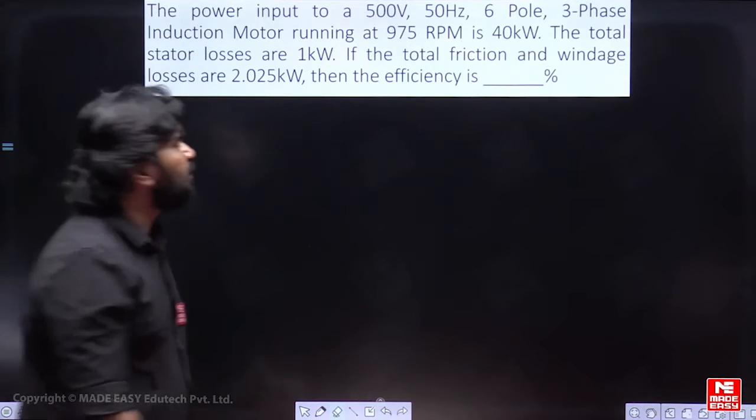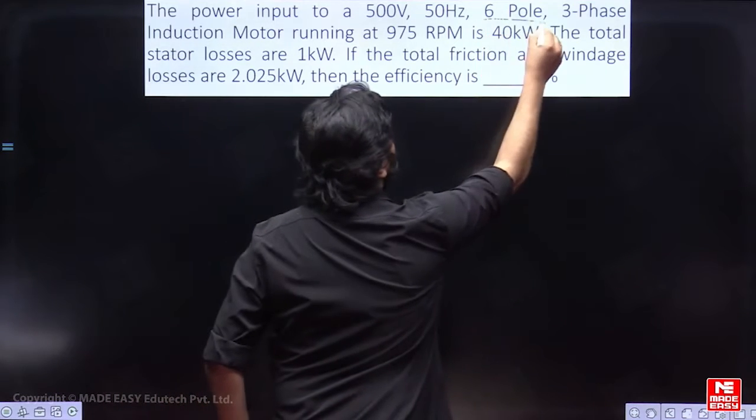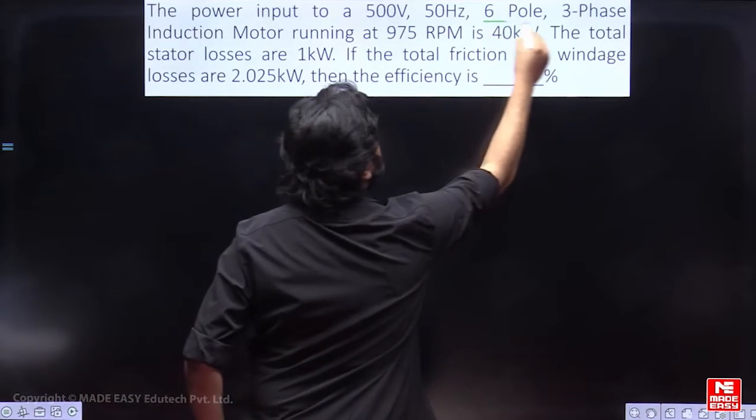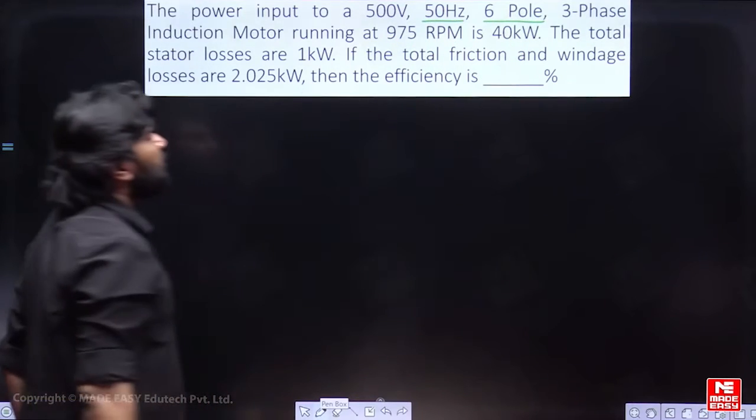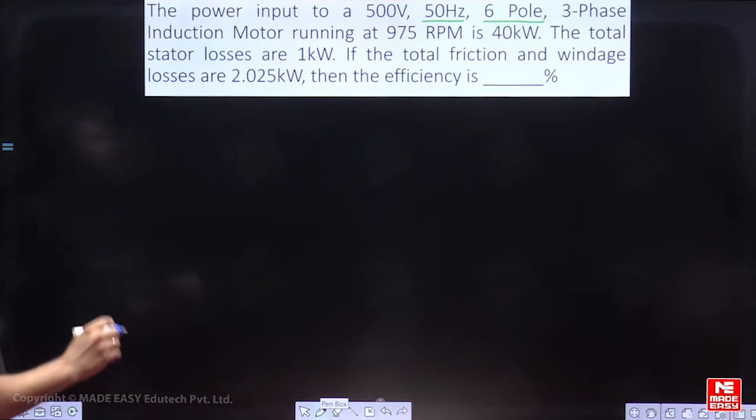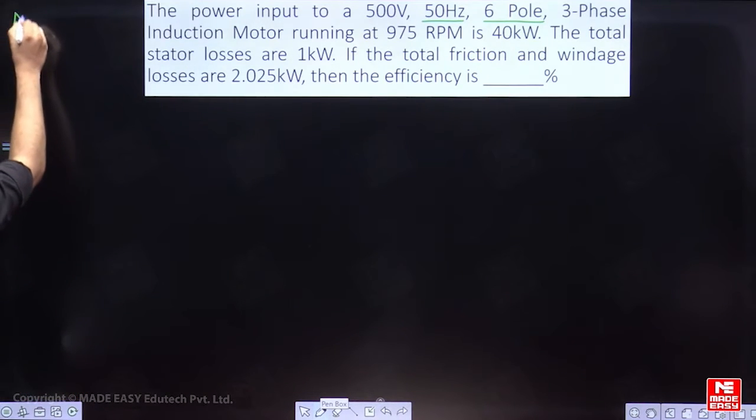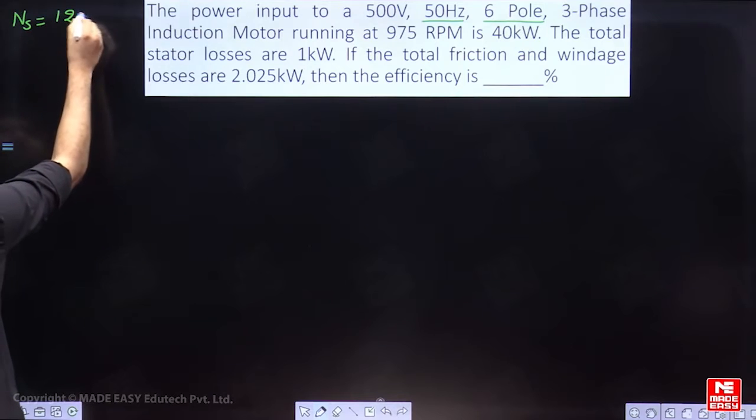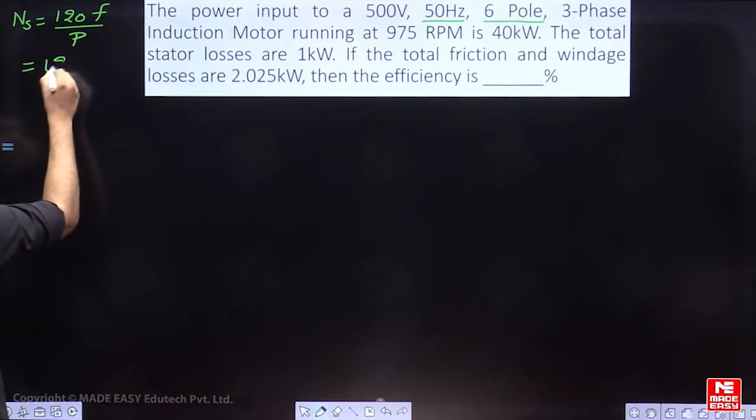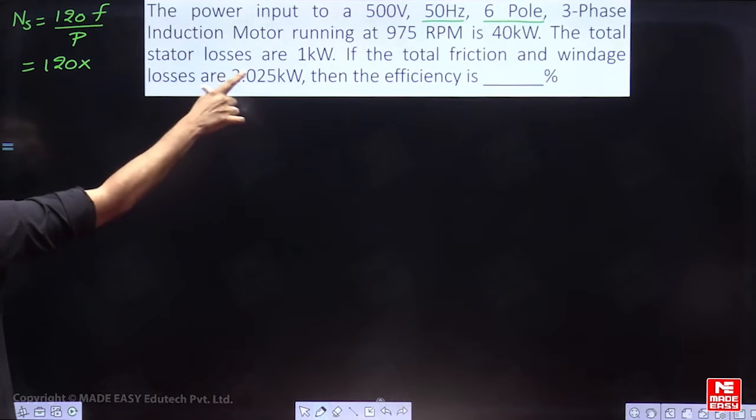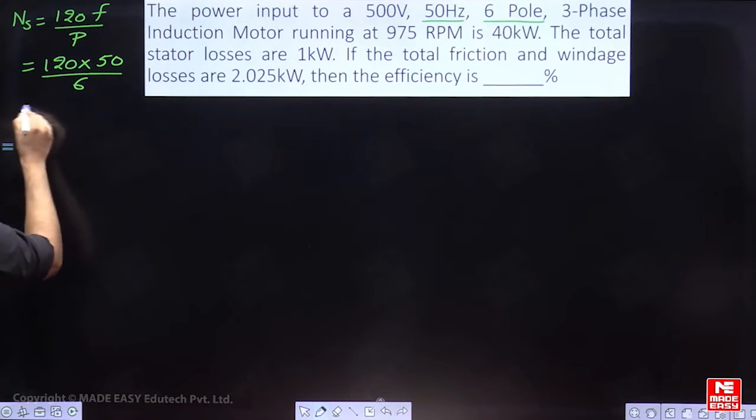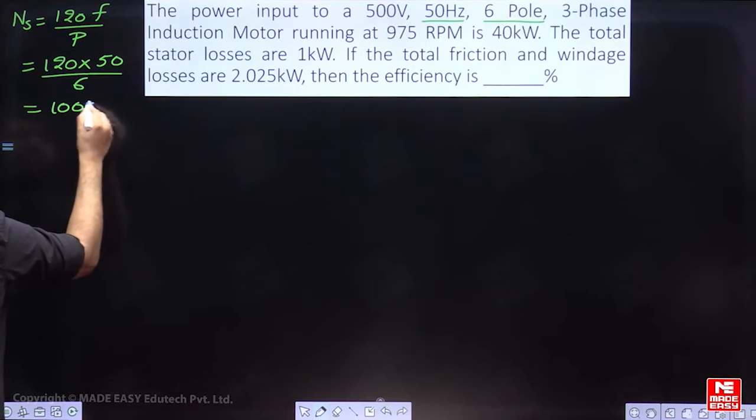It is given 6 pole, 50 hertz motor. So, synchronous speed is 120 F by P that is equal to 120 into F is 50 by 6 that is 1000 rpm.